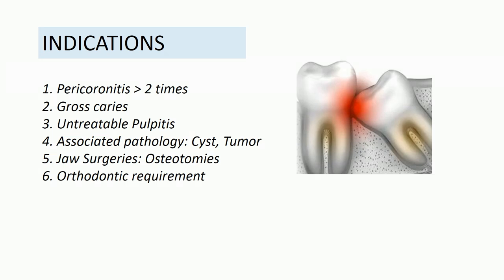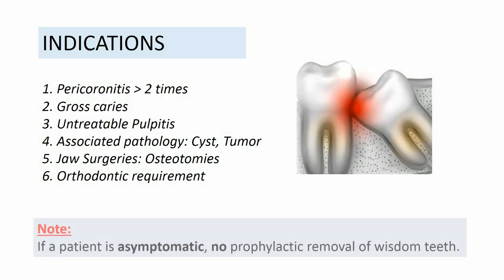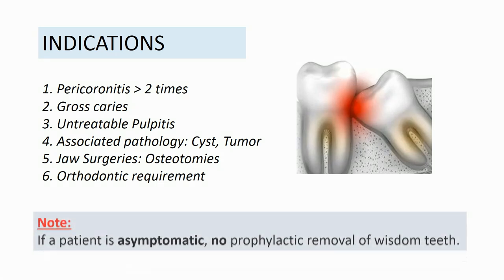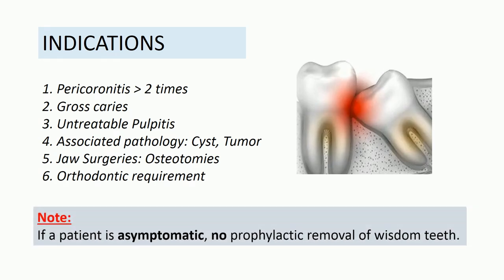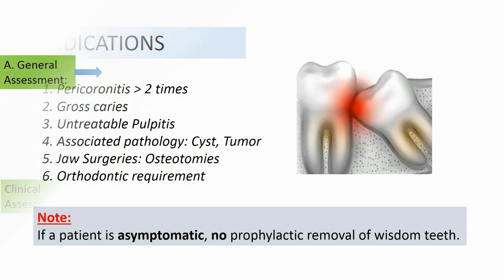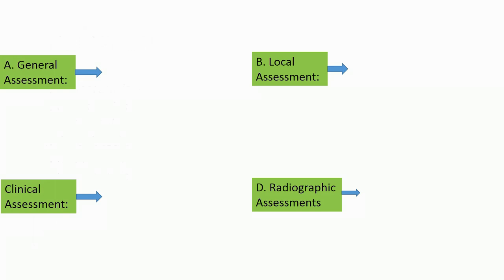Few indications for removal of impacted wisdom teeth are: recurrent episodes of pericoronitis greater than two times, gross caries, untreatable pulpitis, associated pathology such as cysts or tumors, jaw surgeries like osteotomies, or orthodontic treatment. Note that if the patient is asymptomatic, no prophylactic removal of wisdom teeth is done.